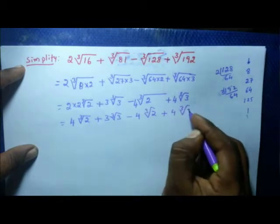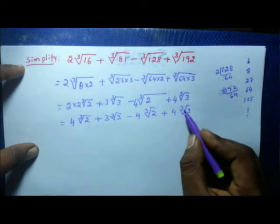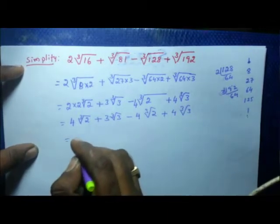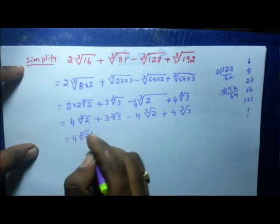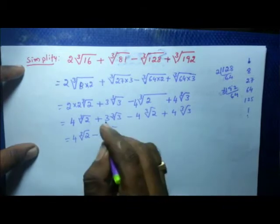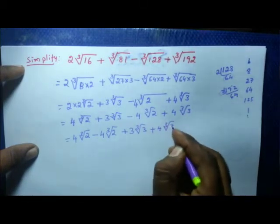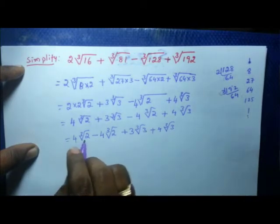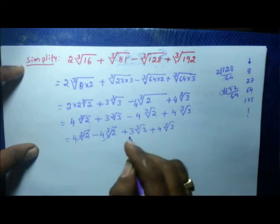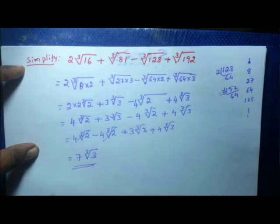Now identify the like surds. The order is 3 for all terms. For cube root of 2 terms: 4 times cube root of 2 minus 4 times cube root of 2 — these two are like surds and cancel out. For cube root of 3 terms: 3 times cube root of 3 plus 4 times cube root of 3 are like surds. Adding: 3 plus 4 is 7, so the answer is 7 times cube root of 3. This is the simplification.